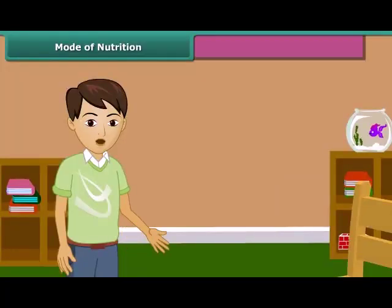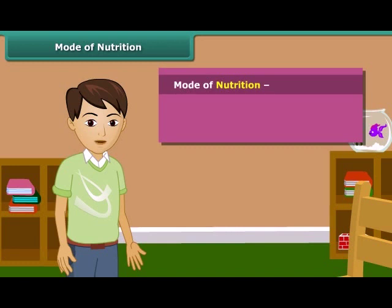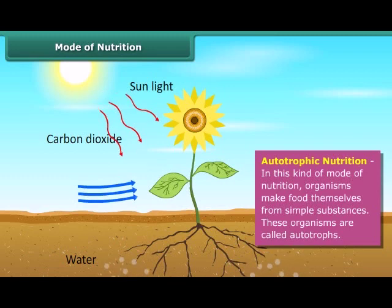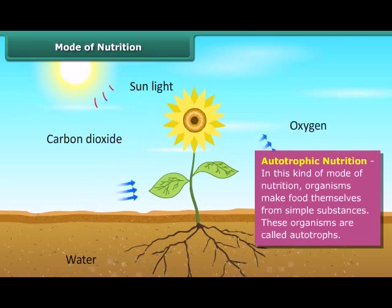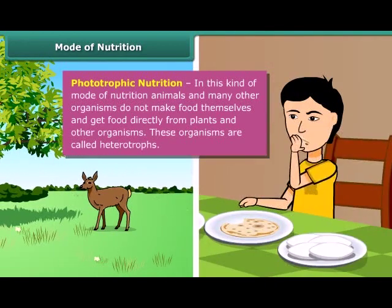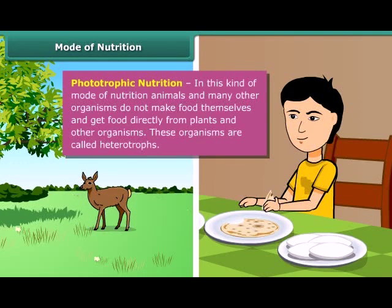Now let's know about the mode of nutrition. There are two types of nutrition modes: autotrophic nutrition and heterotrophic nutrition. The mode of nutrition in which organisms make food themselves from simple substances is called autotrophic nutrition, and these organisms are called autotrophs. The mode of nutrition in which animals and many other organisms take in ready-made food prepared by plants is called heterotrophic nutrition, and these organisms are called heterotrophs. Humans, lions, tigers, etc. are examples of heterotrophs.